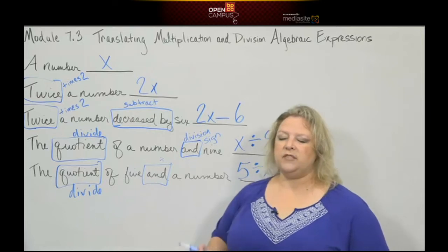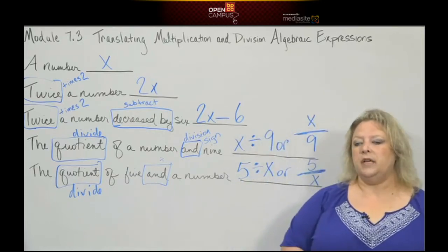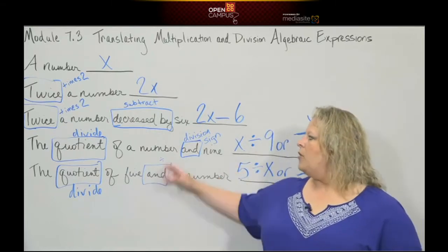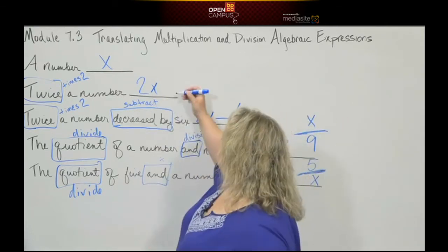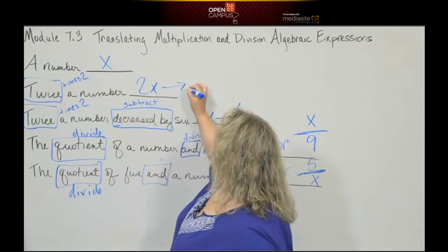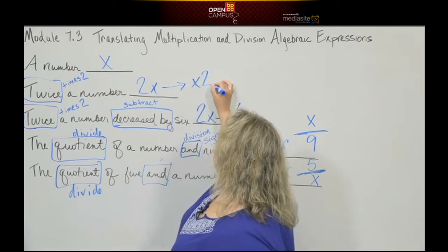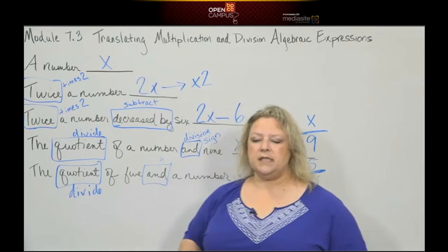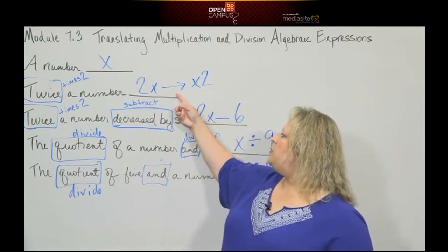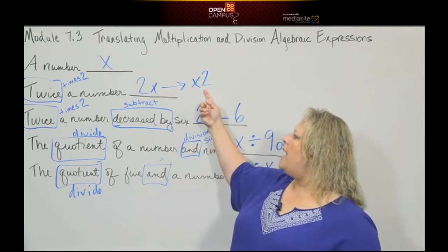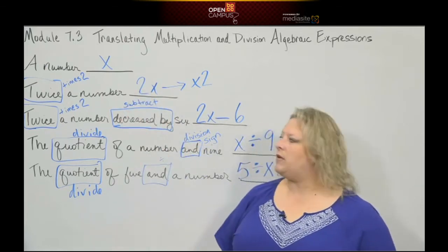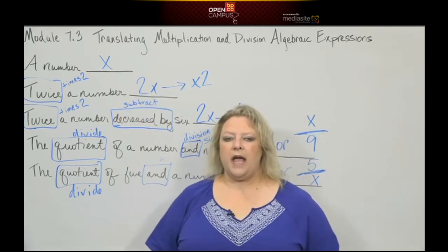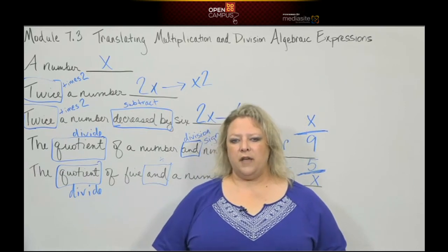You just have to be careful on division about which one goes first. Multiplication is technically commutative, but you don't usually see anything written with the variable first. The coefficient, the number, usually goes in the front. That's all I have for this slide. Come back for another lesson.